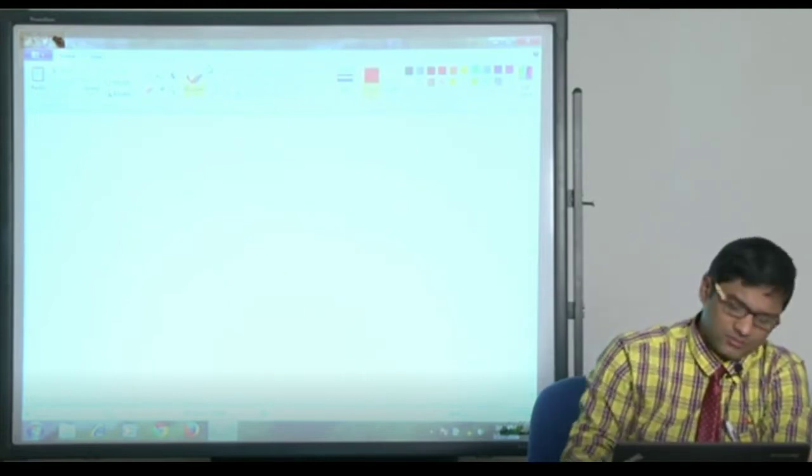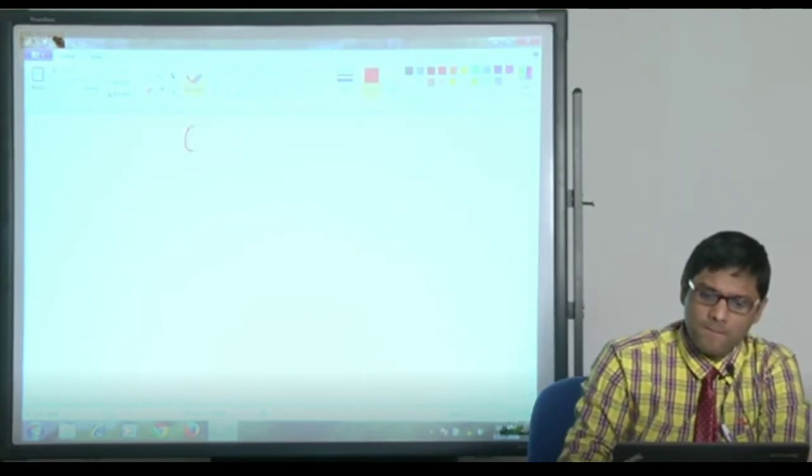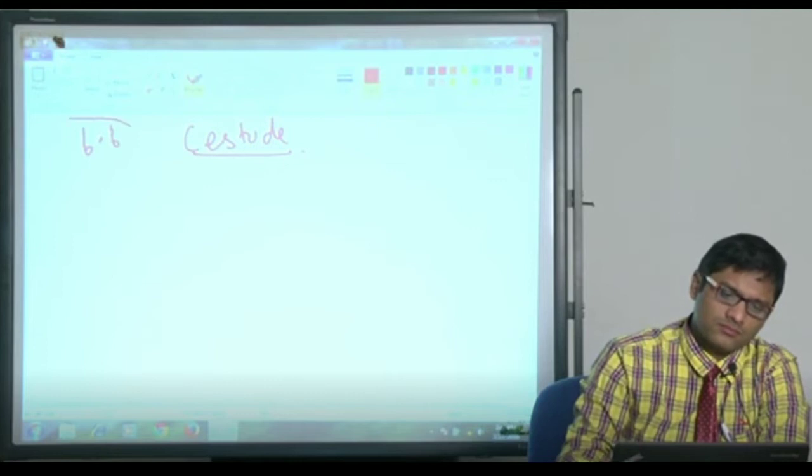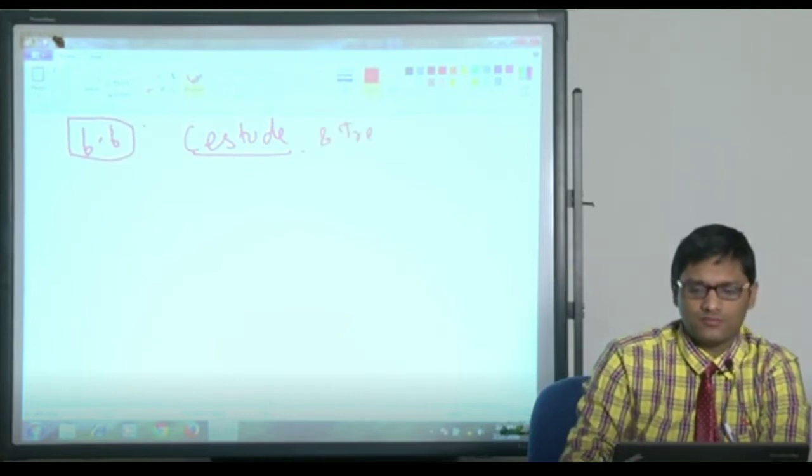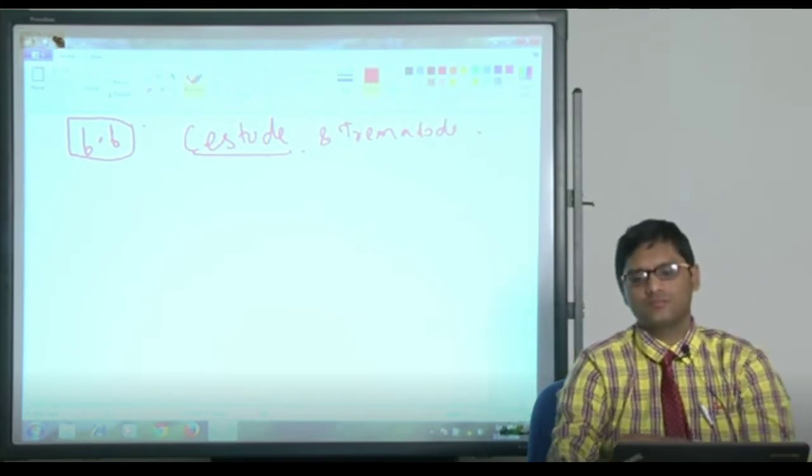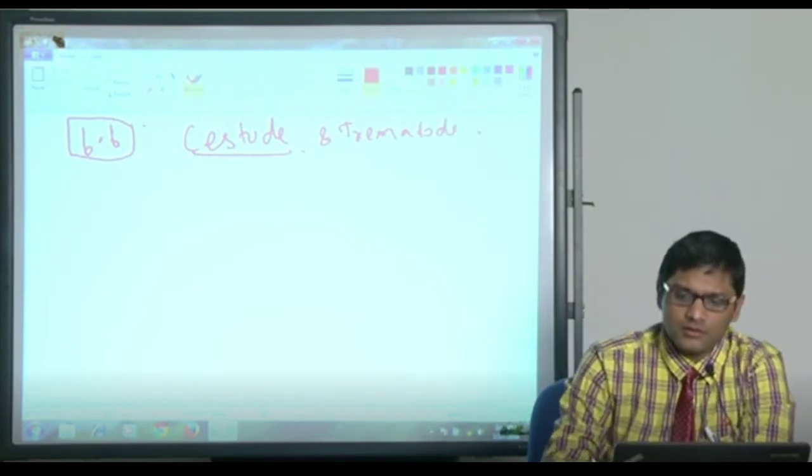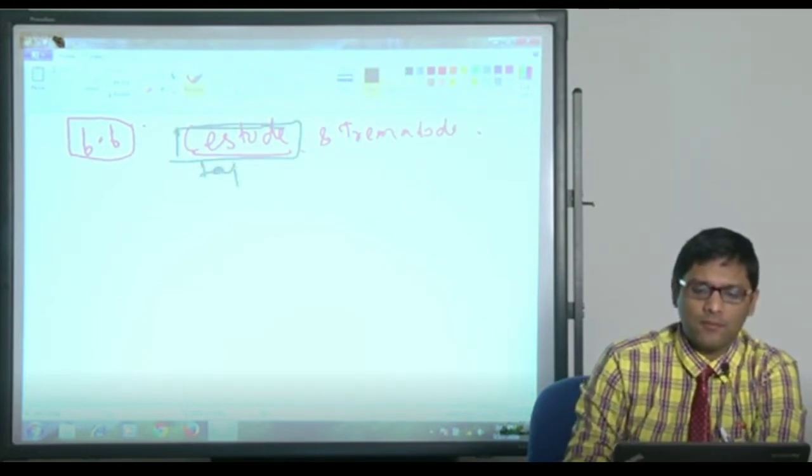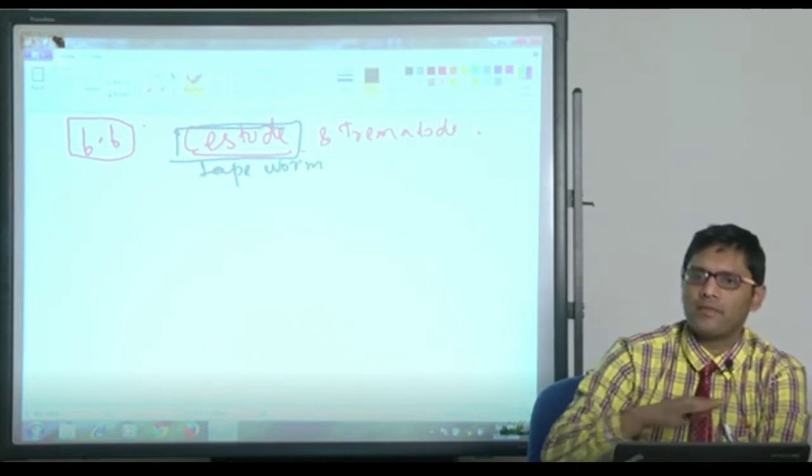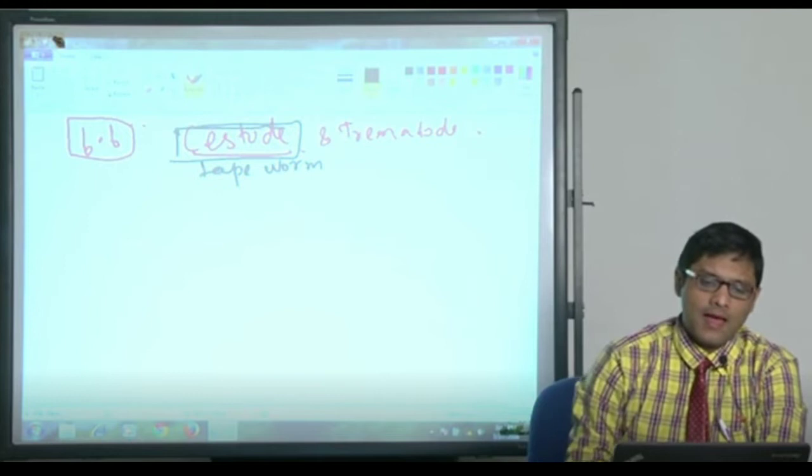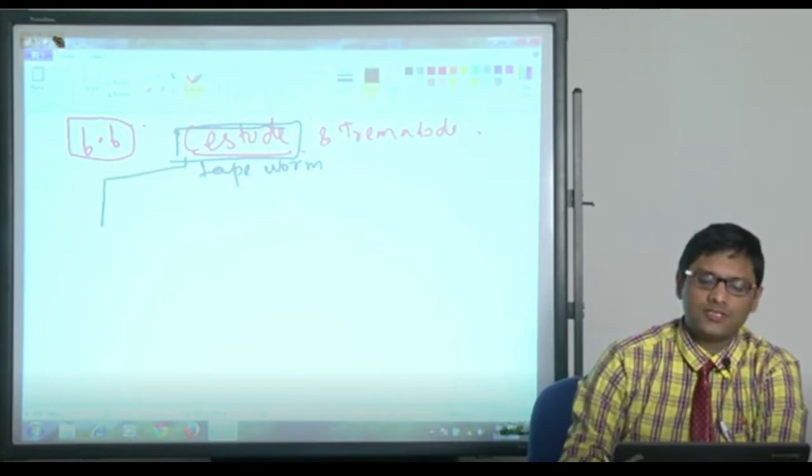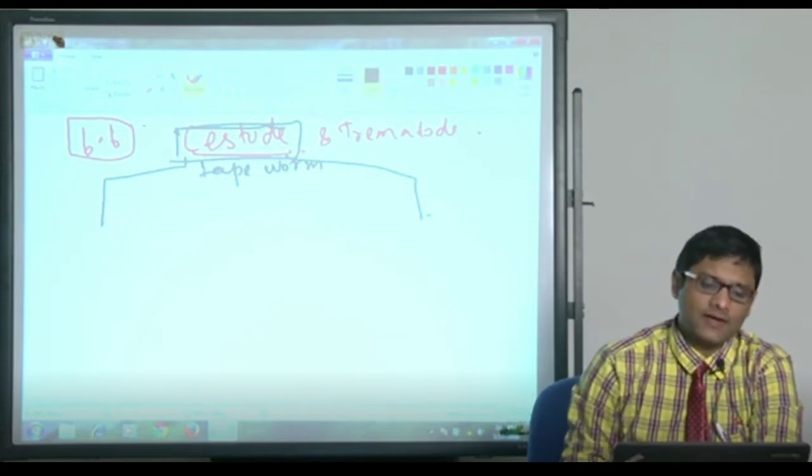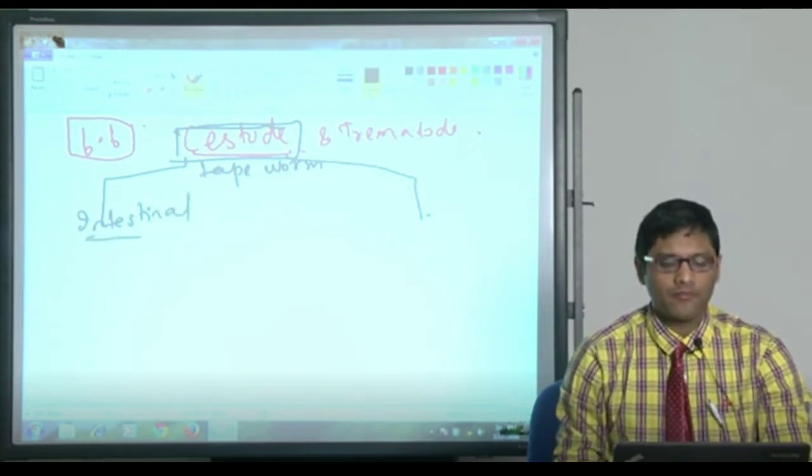Then, we can discuss a bit about Cestode and Trematode. Cestode, also called as tapeworm, they are flatworms. The classification of Cestode is based on habitat - you can classify as intestinal Cestode and somatic Cestode.